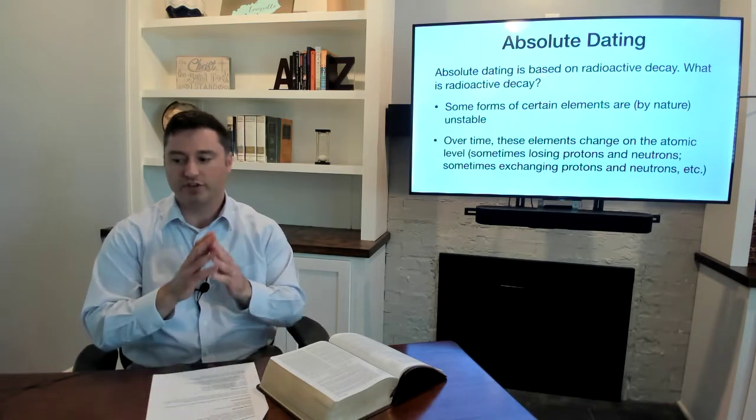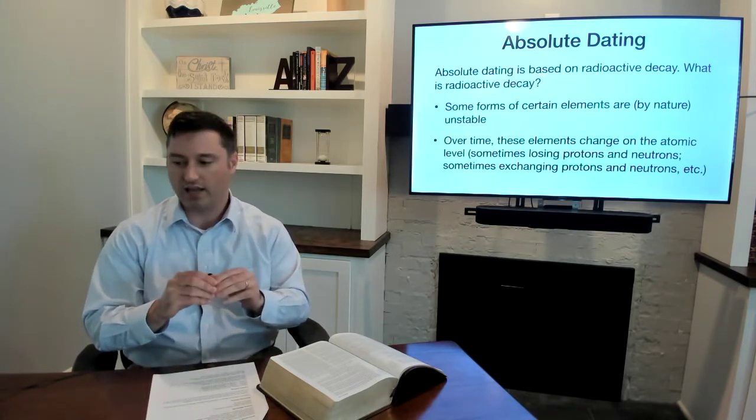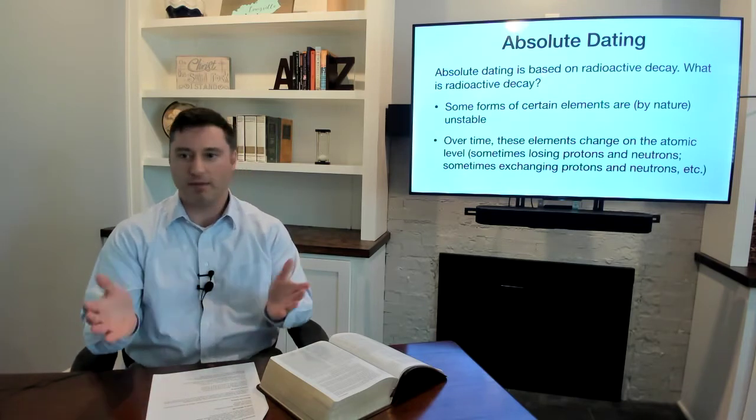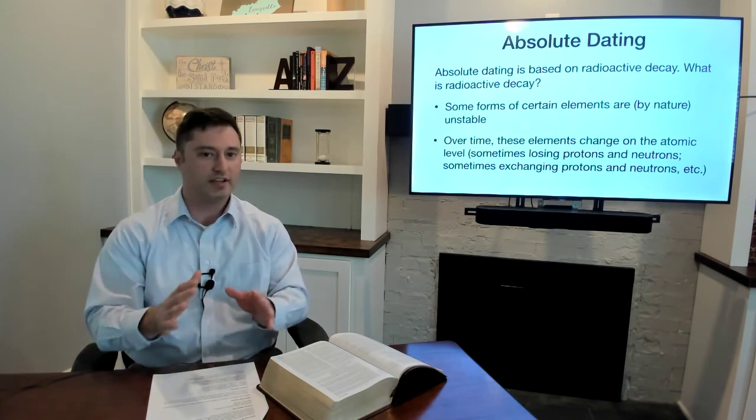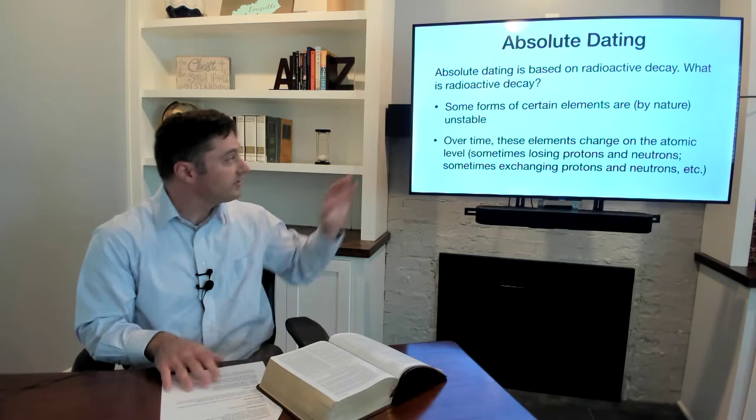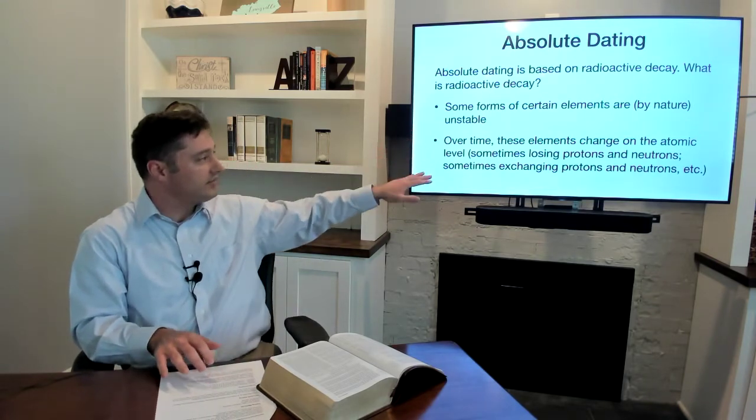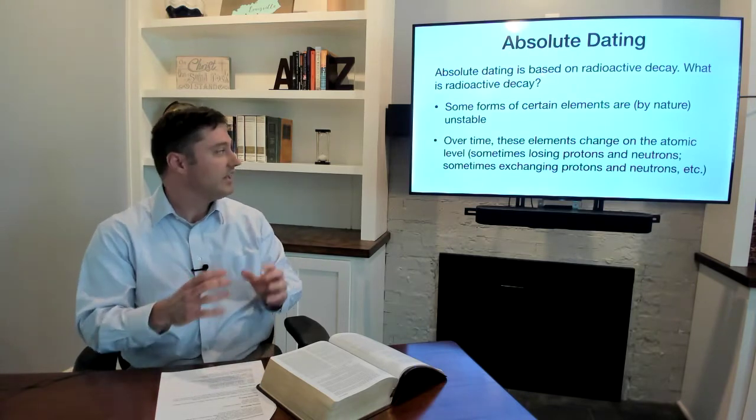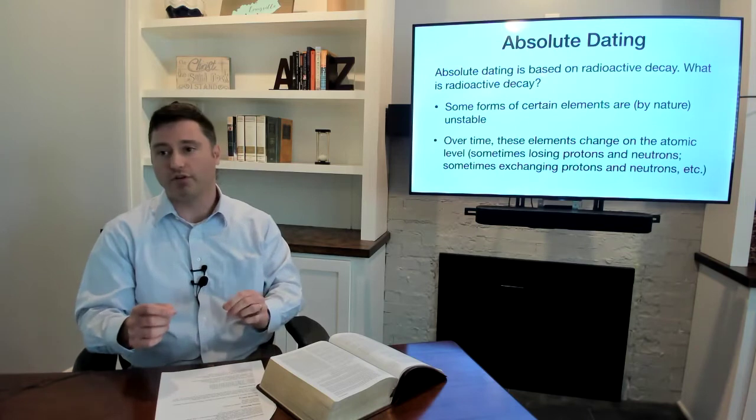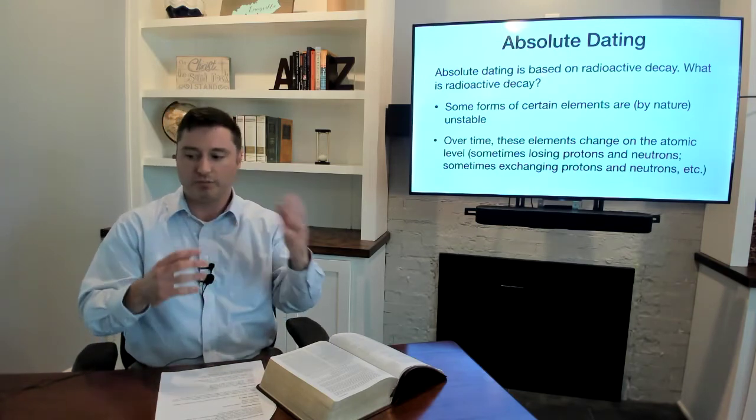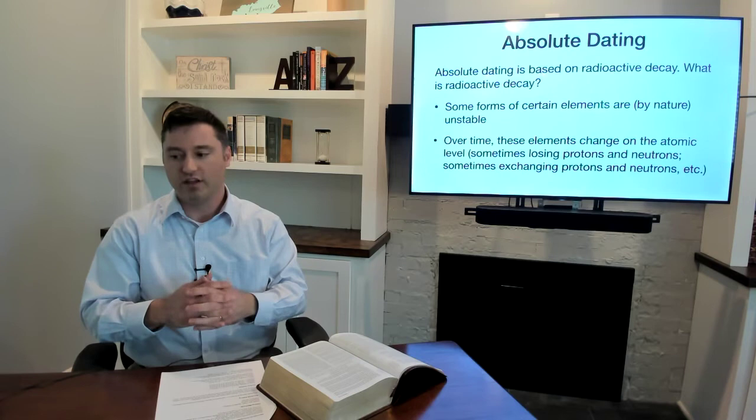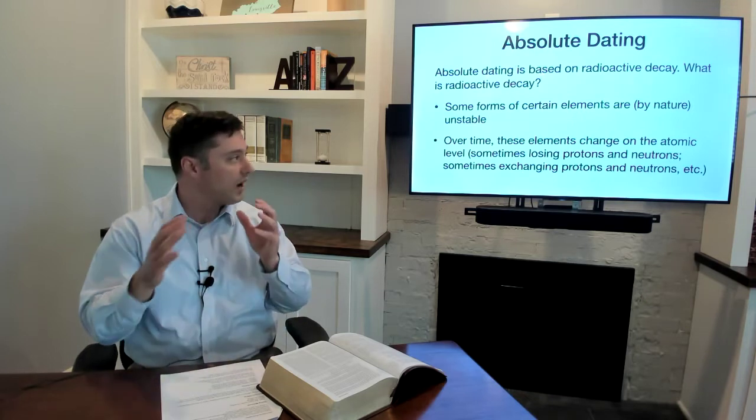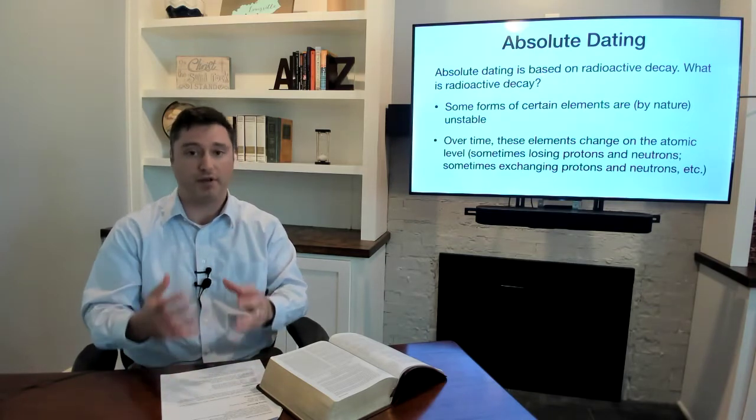So what are we talking about? What is absolute dating? Absolute dating is based on radioactive decay. Okay, well what is radioactive decay? Well some forms of certain elements are by nature unstable. Just in the sense that maybe your Aunt Gertrude is unstable by nature, okay? You just know there are certain things you don't bring up around Aunt Gertrude, right? Well some elements are by nature unstable. And over time, what that means from a scientific perspective is that these elements change on the atomic level. And so sometimes that means losing protons and neutrons. Sometimes it's an exchange of protons and neutrons. But anyway, this is well observed in our modern time. We see this happening all the time.